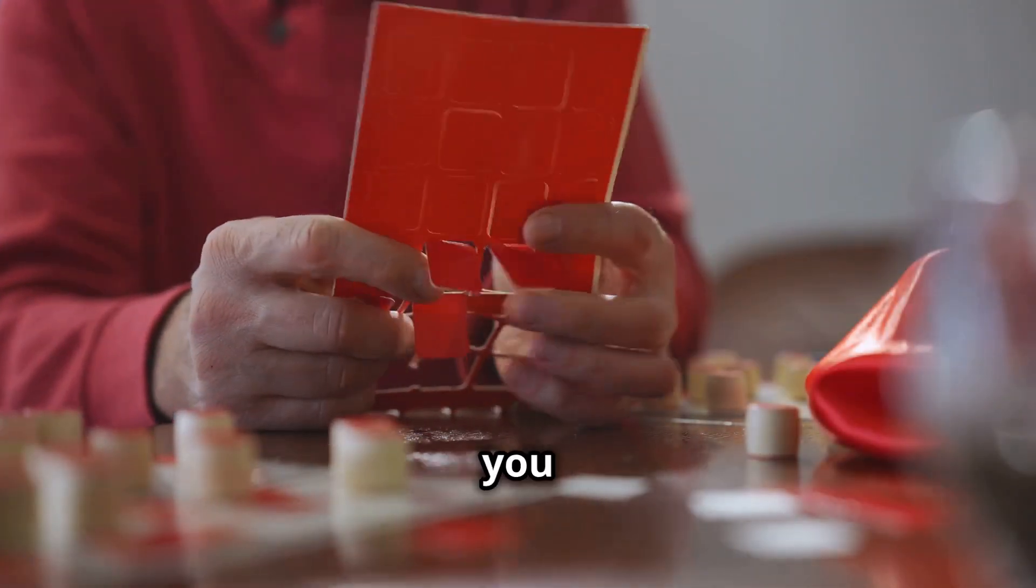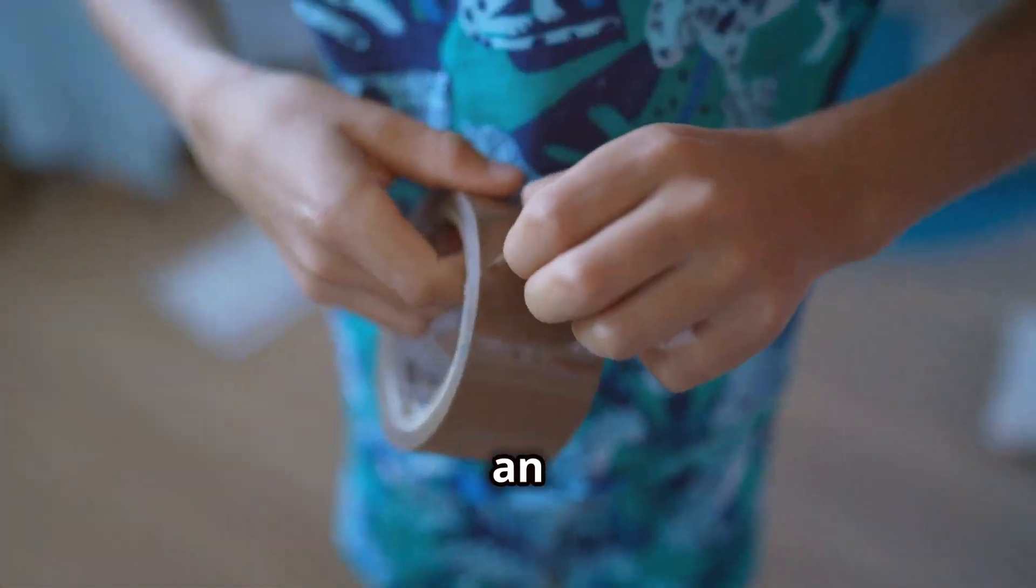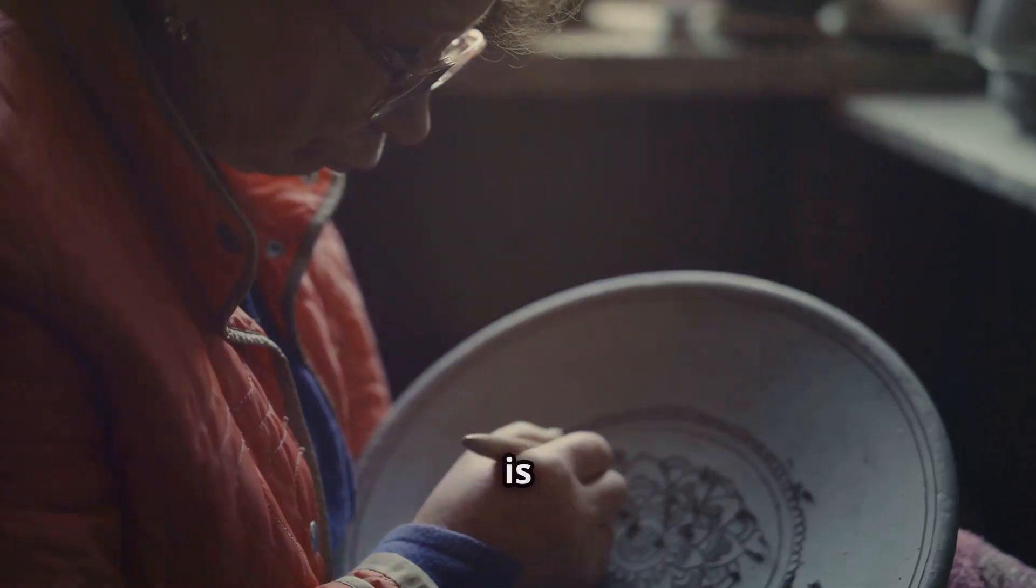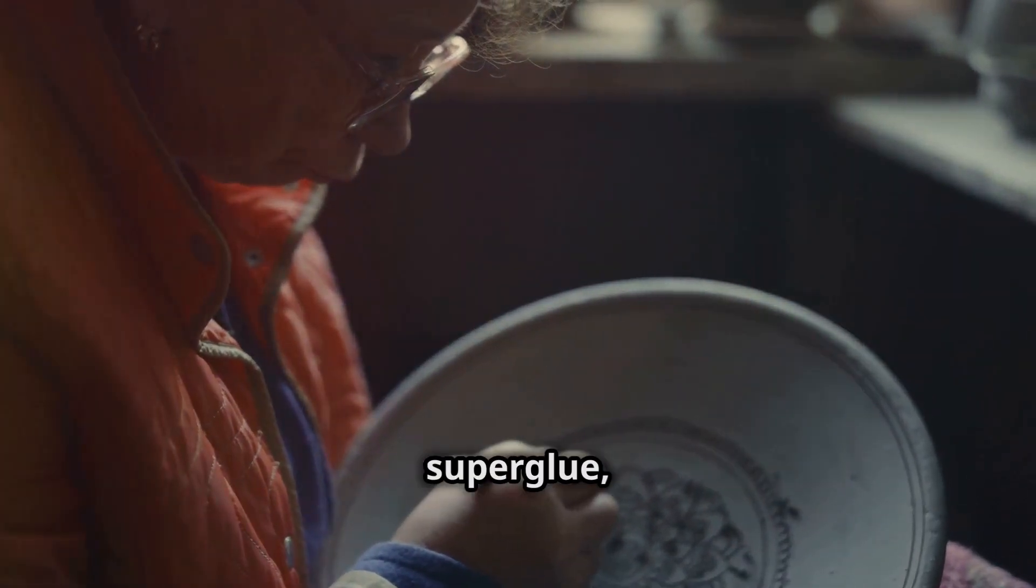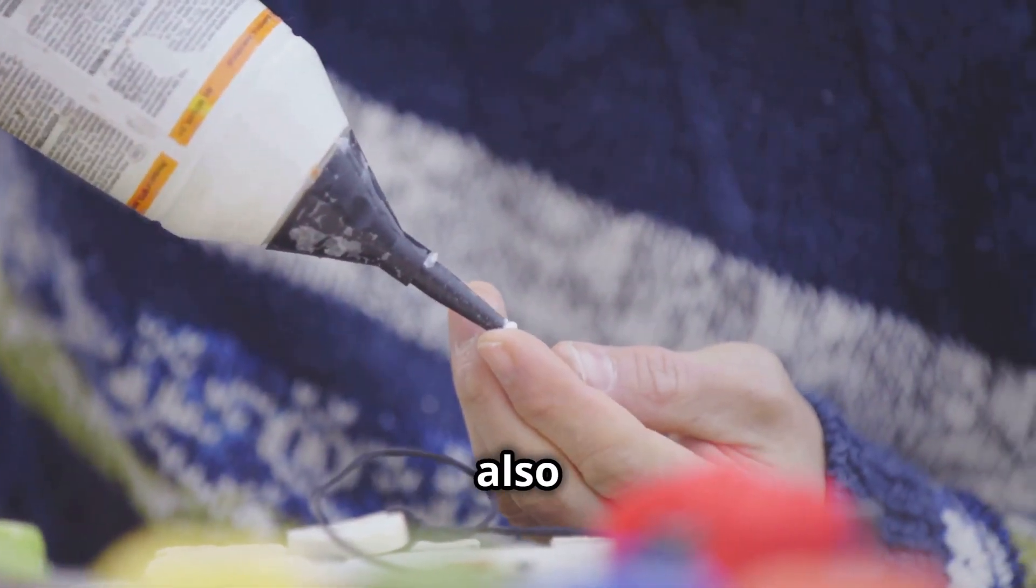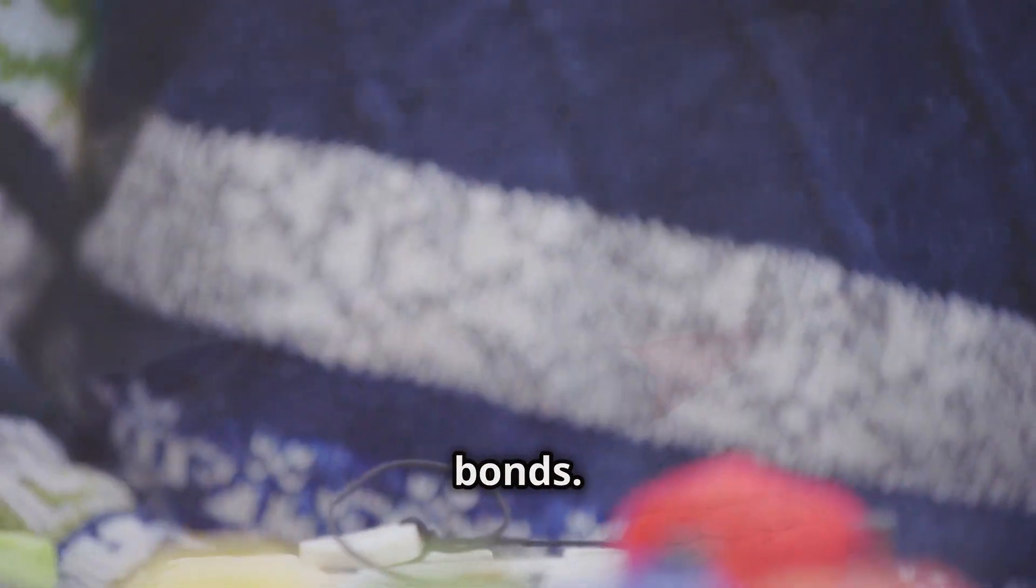Now what happens if you try to unstick something? Breaking an adhesive bond means overcoming both adhesion and cohesion. This is why removing strong adhesives like super glue can be difficult. You're not just pulling it off the surface—you're also trying to break the glue molecule's strong internal bonds.